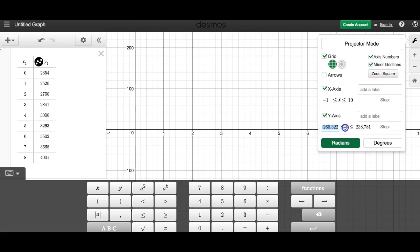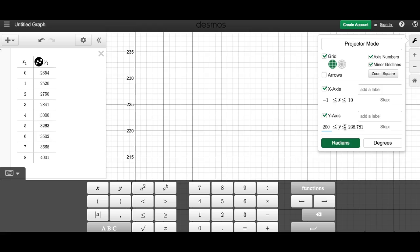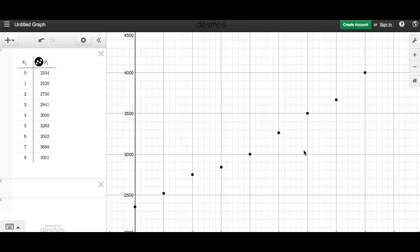And then Y, we can go from 2,000 to about 4,500. Alright, now we see our data points. That actually makes sense.